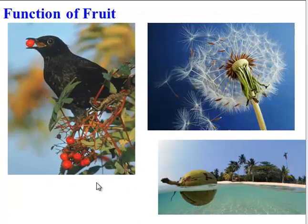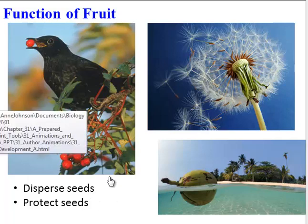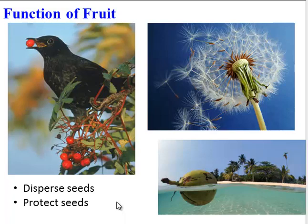Now let's zero in on the function of fruit. Many people think that fruit is there to nourish the seeds, but that's not true — there is food inside the seed for the plant embryo. The function of fruit is two things: to disperse the seeds and to protect the seeds. For example, if an animal eats some fruit, that fruit containing the seed might pass through the animal's body and be deposited somewhere else. Or a coconut can disperse its seed to another island. And the dandelion — these are actually fruits being blown — that's also for seed dispersal.